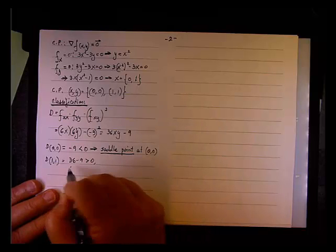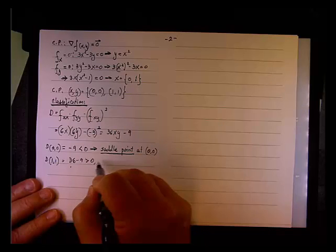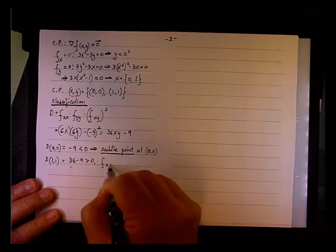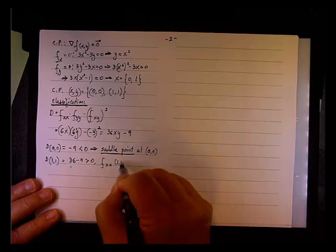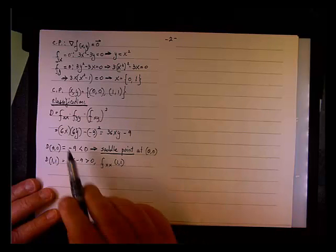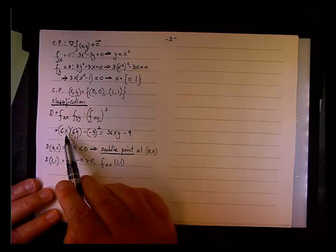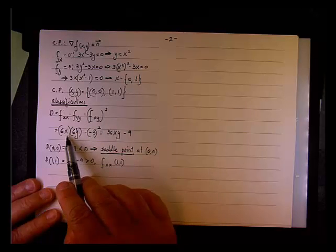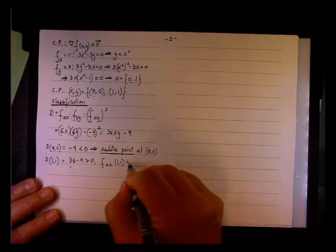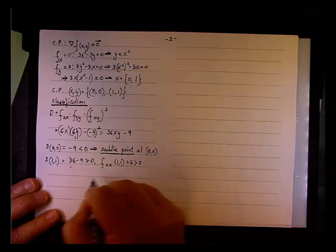Okay, fₓₓ at (1,1). It was 6x, right? Equals 6, is positive.